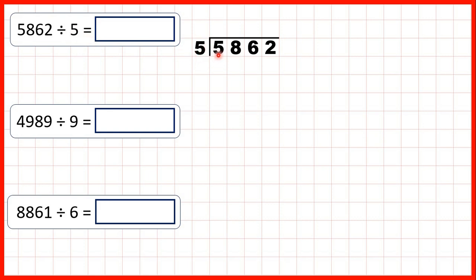Using short division, we start by dividing the larger place values. So first we have 5 divided by 5. That's exactly 1 because 1 times 5 is 5. So we don't have a remainder here, so we can move on to the next digit. And 8 divided by 5 is 1 remainder 3, because 1 times 5 is 5, but then from 5 we need 3 more to get to 8.